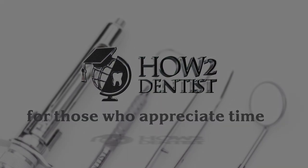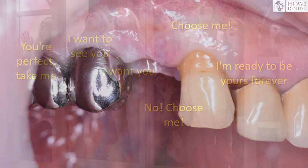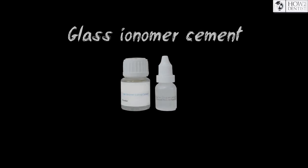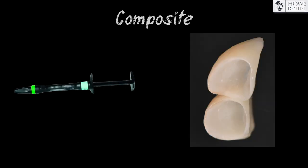Hi, there is a huge amount of luting materials on the dental market. But usually when fixing metal and porcelain fused to metal restorations, dentists automatically select a glass ionomer cement — or as we will call it here and after, GIC — and composites for ceramic.